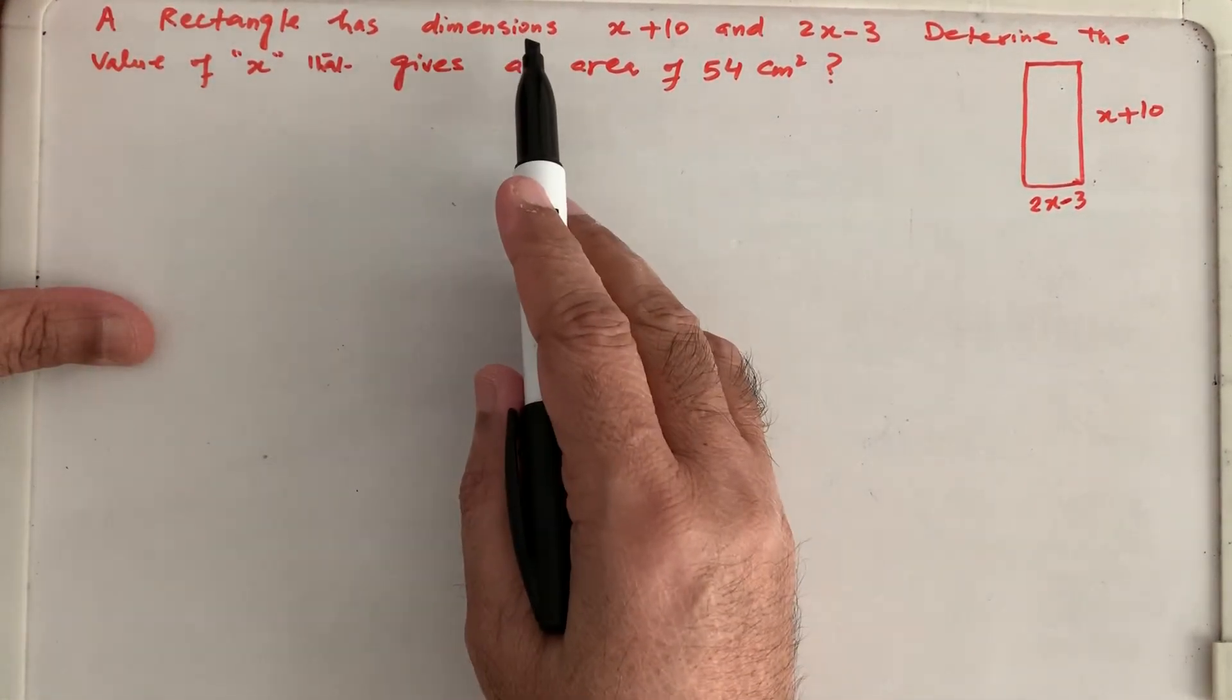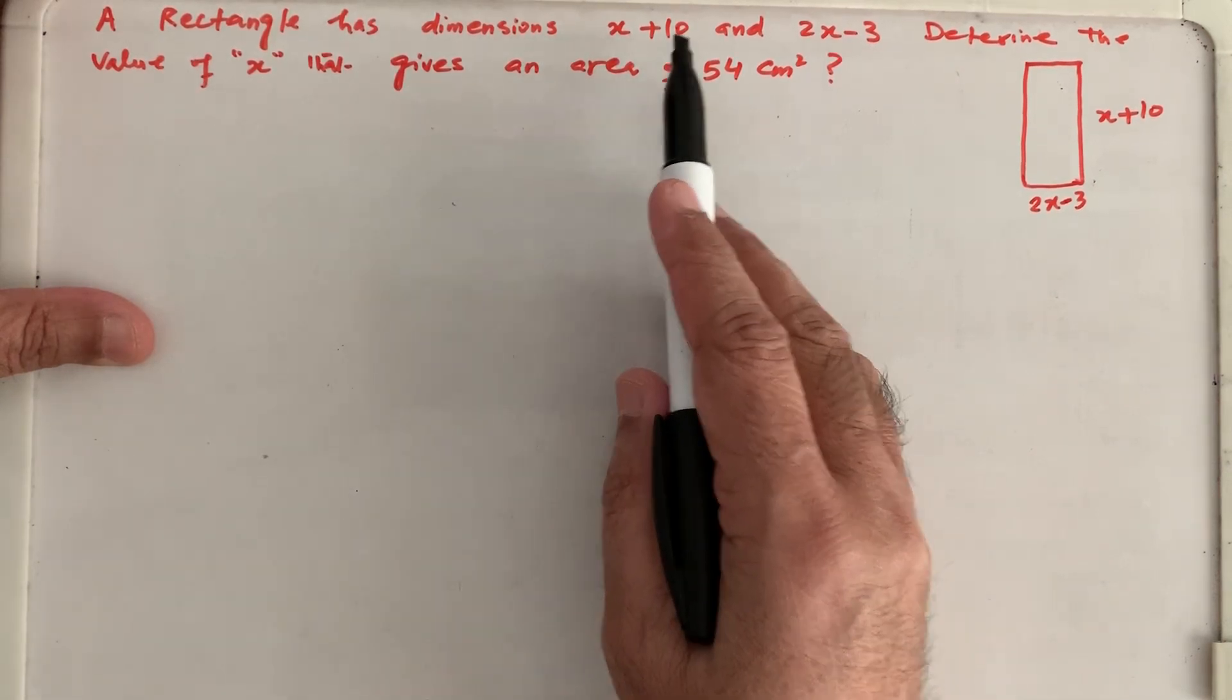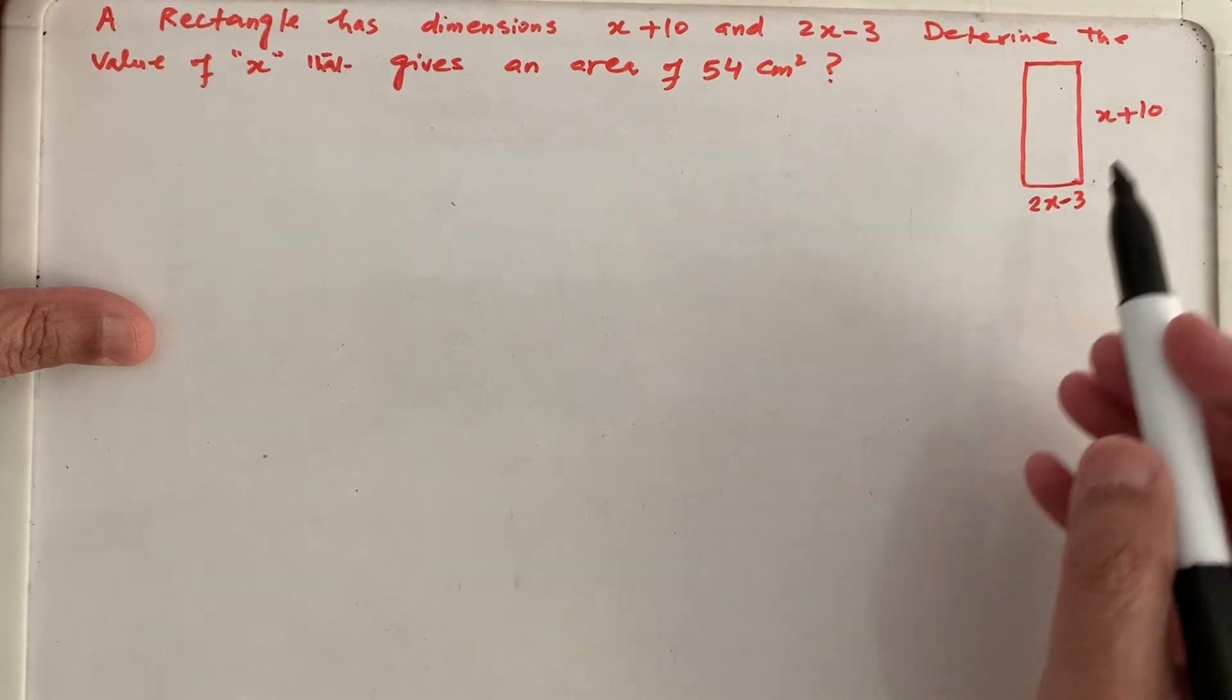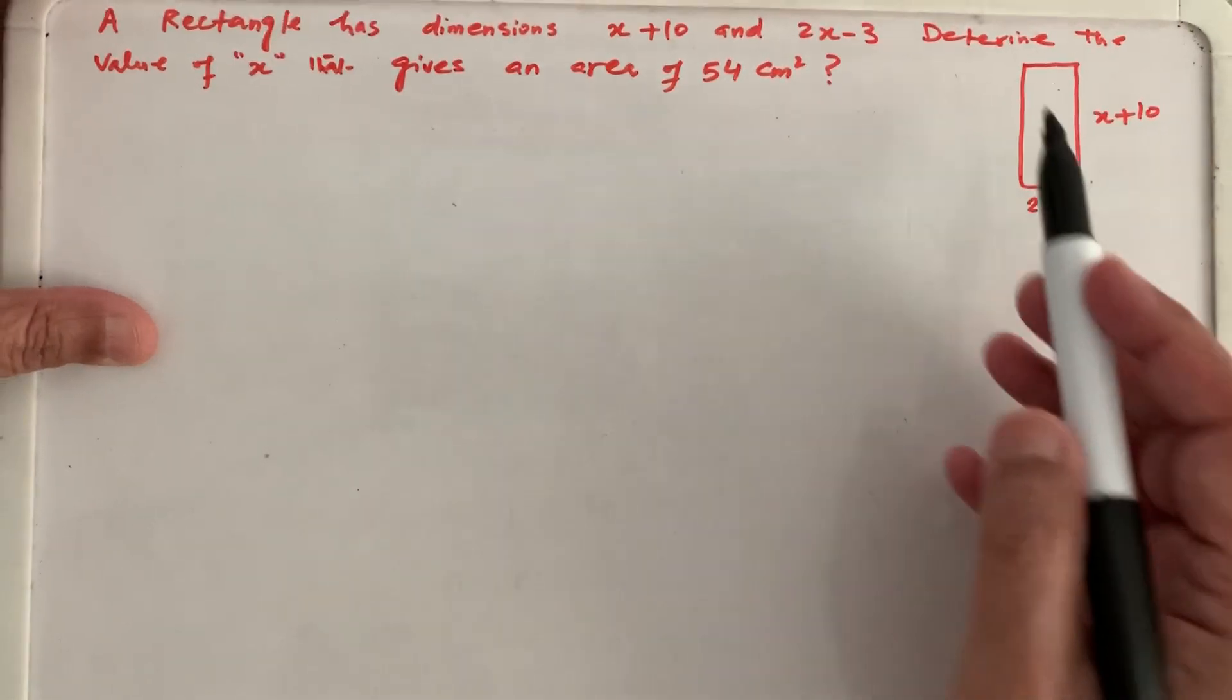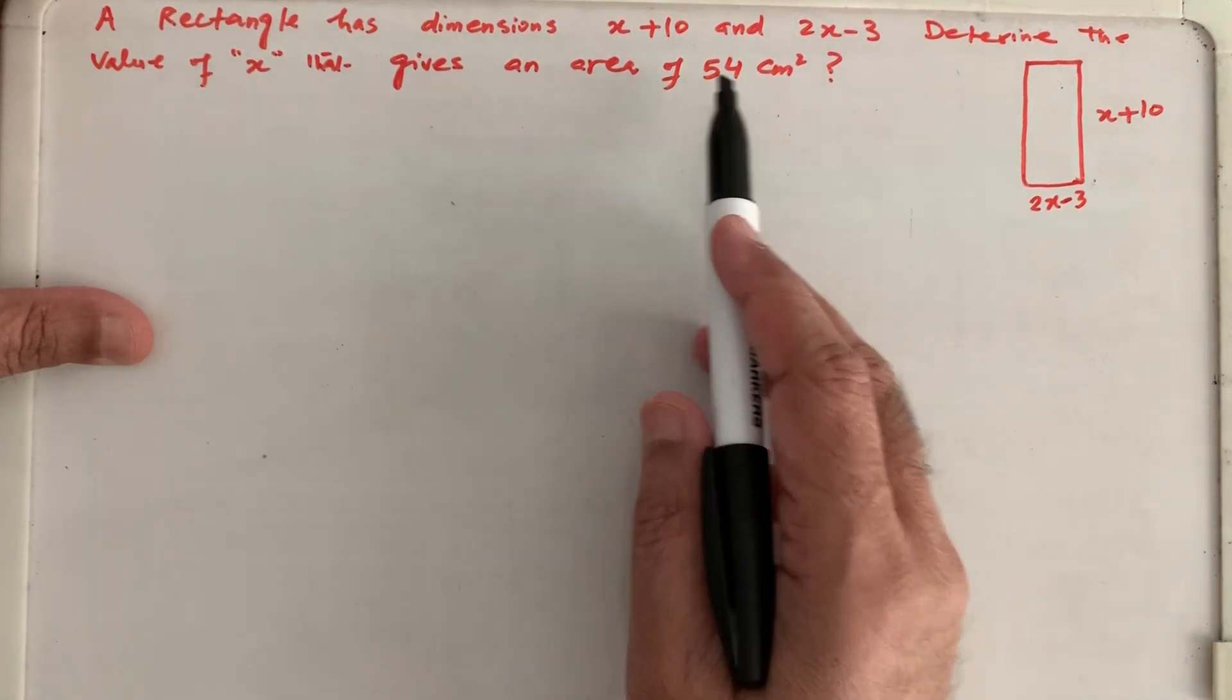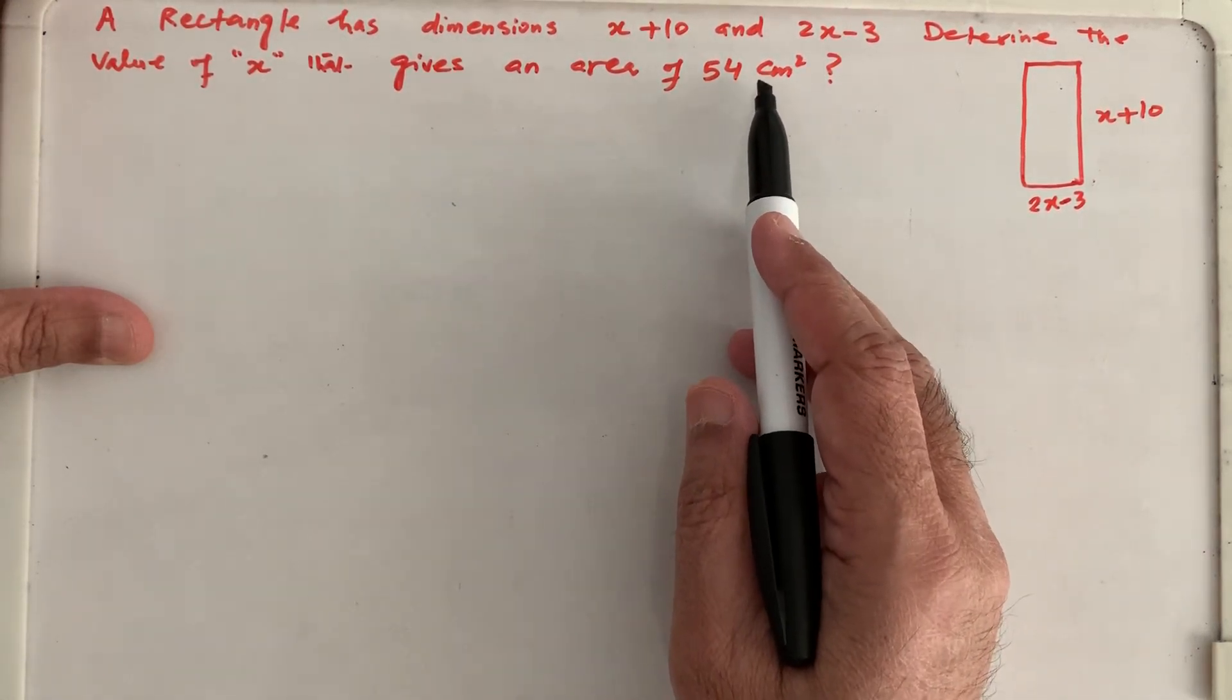A rectangle has dimensions x plus 10 and 2x minus 3. Determine the value of x that gives an area of 54 cm square.